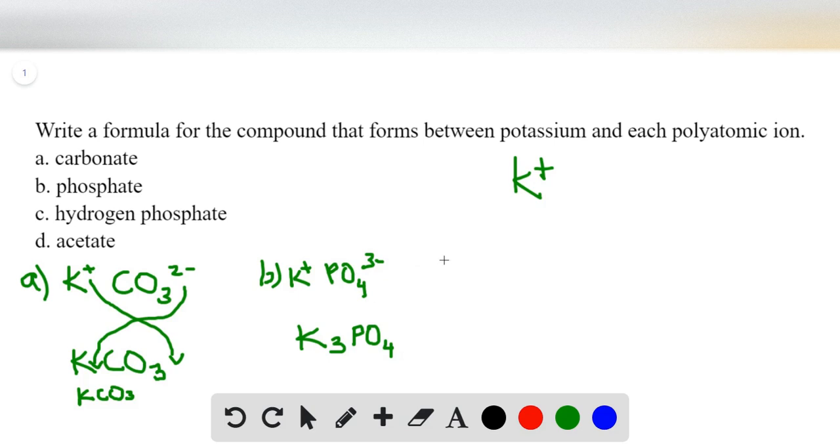Now C, hydrogen phosphate. This is potassium, this is HPO3, this is hydrogen phosphate, and it has a charge of 2 minus. And it is the same practice: potassium with the charge of the anion, and then HPO3 with the charge of the cation, which is 1.